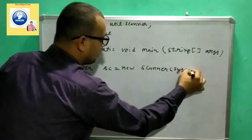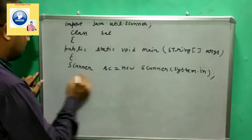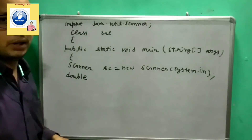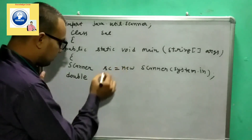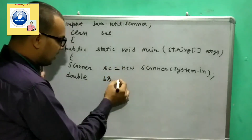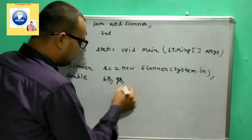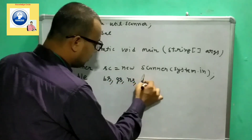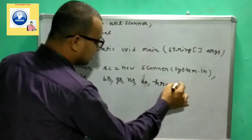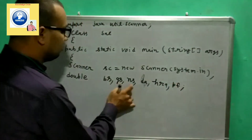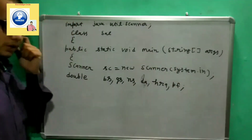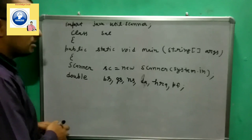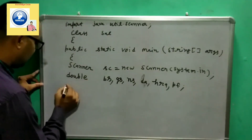After making an object of the Scanner class, we declare the variables. Looking at the variable description, all variables are of double type. We declare: bs for basic salary, gs for gross salary, ns for net salary, da for dearness allowance, hra for house rent allowance, and pf for provident fund — six variables total, all declared together since they share the same type.